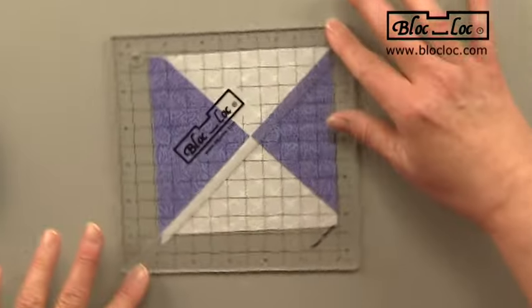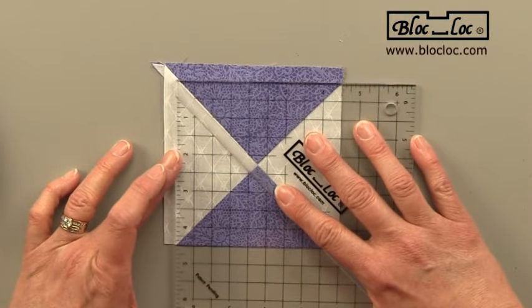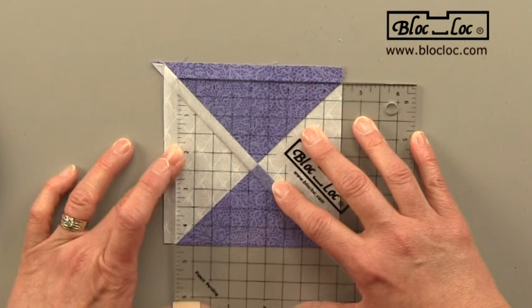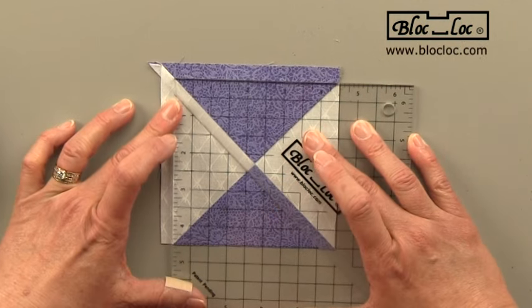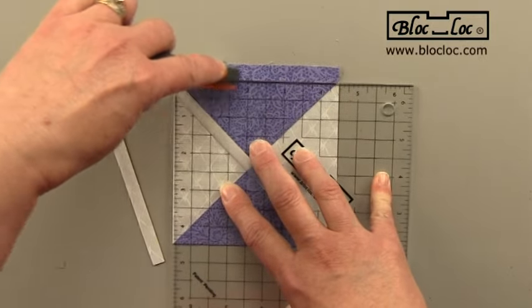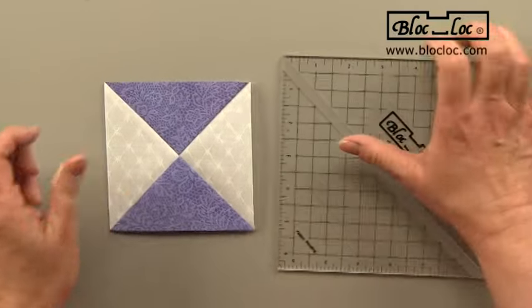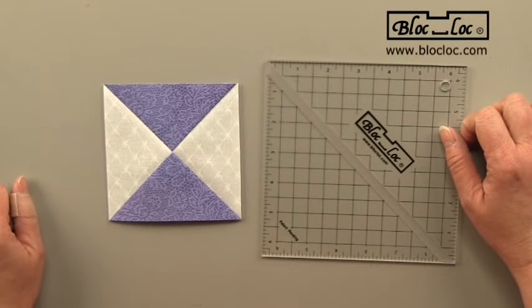And then I'll turn the unit around. And now I've got the cut edge to go by, which makes it a lot easier. And I just slide it back. Make sure that you stay locked on. And then you'll make your final cut. And that's how quickly you can square up a quarter square triangle.